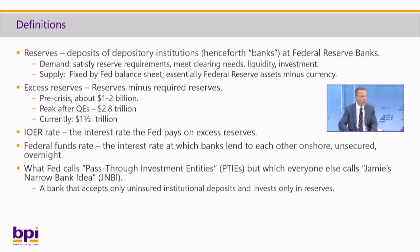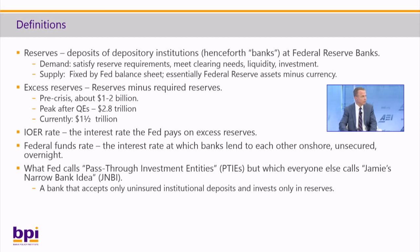The IOER rate is the interest rate that the Fed pays on excess reserves. The federal funds rate is the overnight rate — a market rate at which banks lend to one another onshore, unsecured, overnight. It's the rate that the FOMC targets. And what the Fed calls pass-through investment entities — but which everyone else calls Jamie's narrow bank idea or JNBI — is a bank that accepts only uninsured institutional deposits and invests only in reserves. Before the crisis, the Fed conducted policy in what's called a corridor system, though the floor of the corridor was zero.